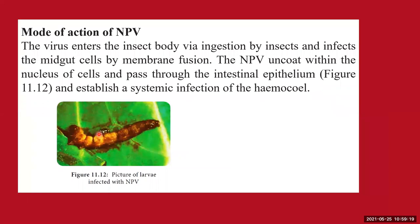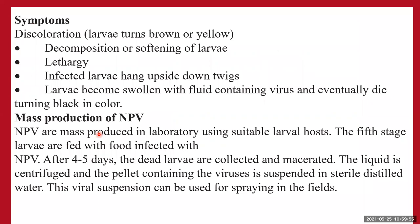The virus enters the insect body via ingestion. After entering, it infects the midgut cell by membrane fusion. The Nuclear Polyhedrosis Virus uncoats itself within the nucleus of the cell, passes through the intestinal epithelium, and establishes a systemic infection of the hemocoel, leading to the death of the insect. Symptoms in attacked larvae include discoloration (turning brown or yellow), softening, lethargy, hanging upside down from twigs, swelling with fluid containing virus, and eventually turning black and dying.